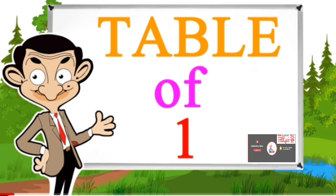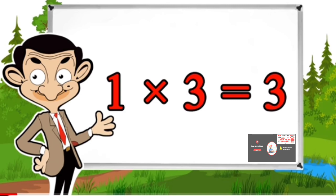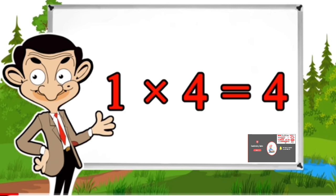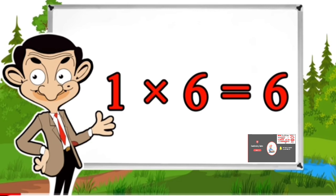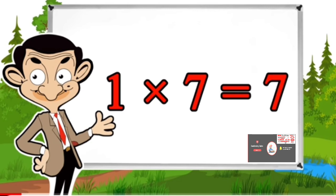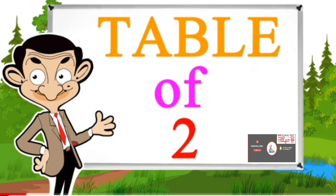Table of 1: 1×1=1, 1×2=2, 1×3=3, 1×4=4, 1×5=5, 1×6=6, 1×7=7, 1×8=8, 1×9=9, 1×10=10. Table of 2.